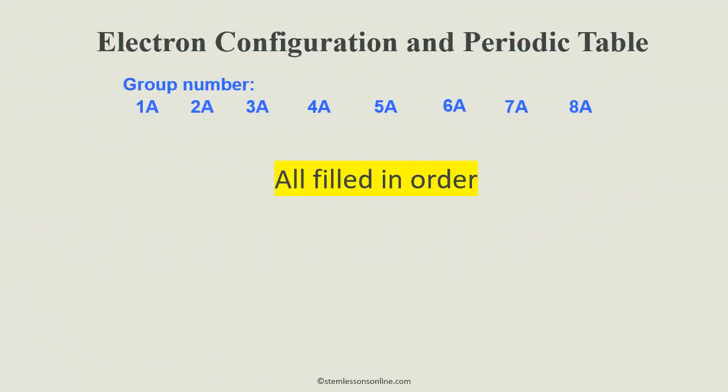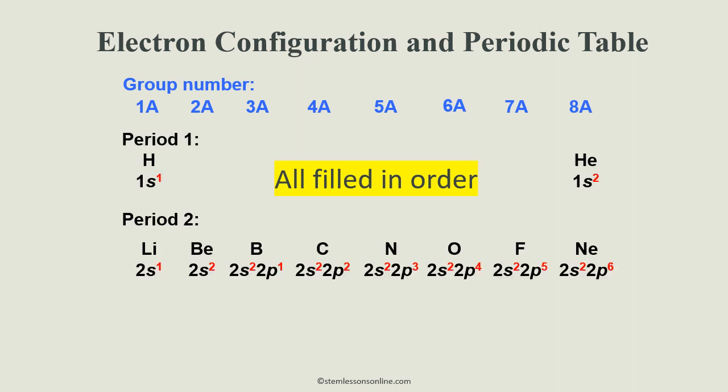Now, look at the configuration of different elements from different groups and periods. What can we observe from the electron configuration of group 1?